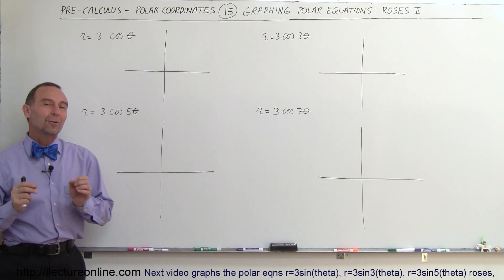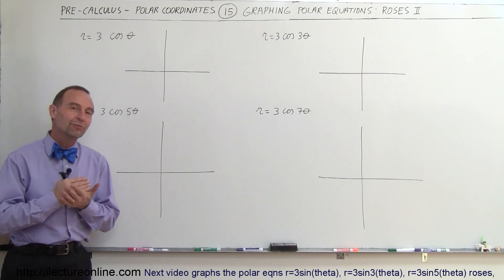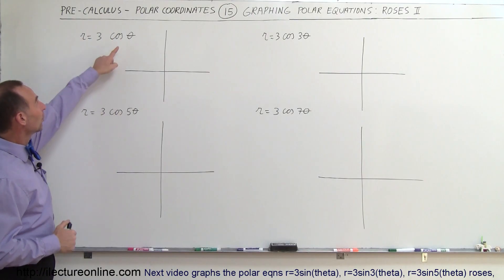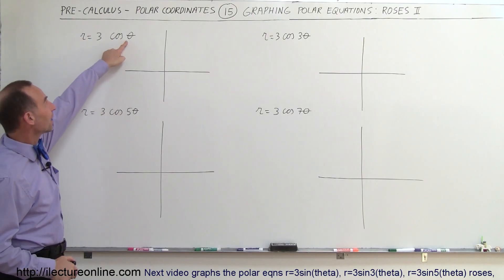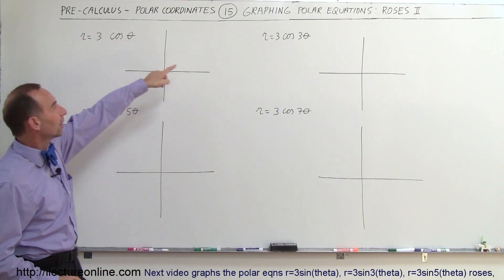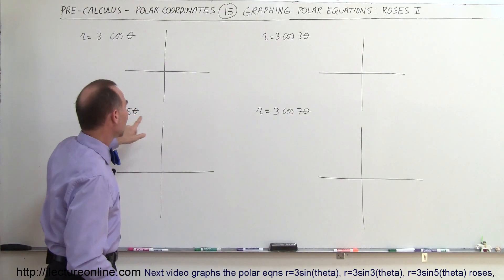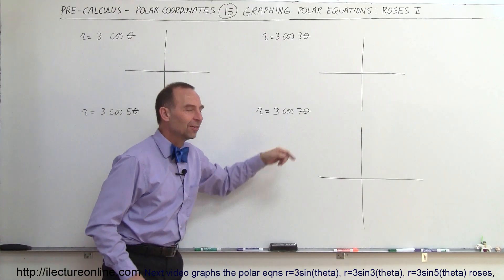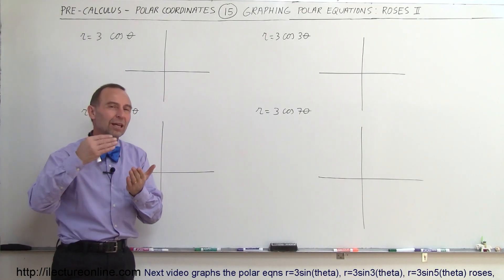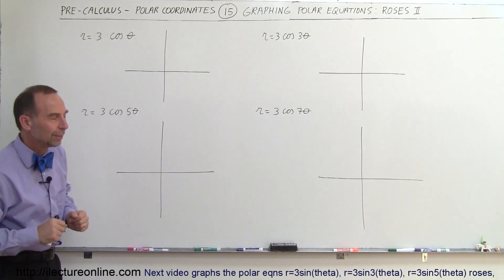Welcome to Electronal Line. Now we're going to graph the odd functions. In other words, the number in front of the angle will now be odd: 1 theta, 3 theta, 5 theta, and 7 theta. Remember, in the previous video it was 2 theta, 4 theta, 6 theta, and 8 theta — those were even.